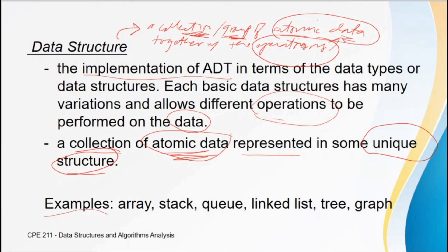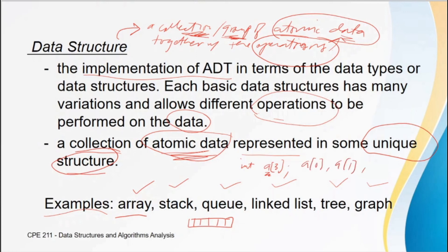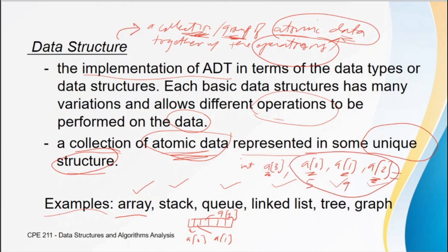The atomic data values are structured in a unique way. Examples — which we will discuss for the remainder of the semester — are array, stack, queue, linked list, tree, and graph. For array, the atomic data values are stored linearly. For example, if you declare in C language A to be an array of three integers, you have A[0], A[1], and A[2] as the three data items. If the values are 5, 9, and 3, then A[0] stores 5, A[1] stores 9, and A[2] stores 3.